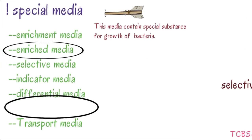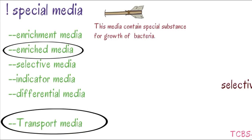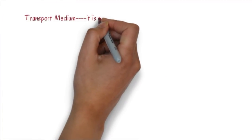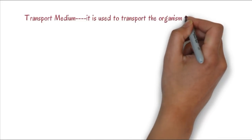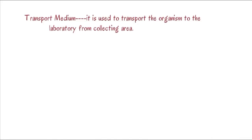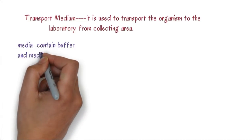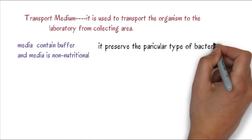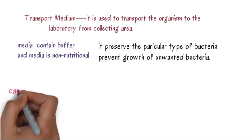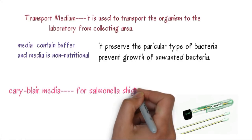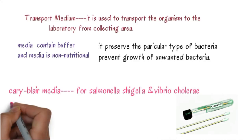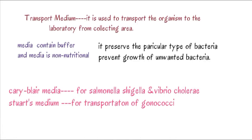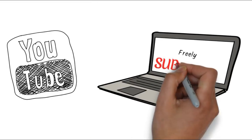Transport media is used to transport the organism to the laboratory from the collecting area. Transport media contains buffer and is non-nutritional. It preserves the particular type of bacteria and prevents unwanted growth. Examples: Cary-Blair media for Salmonella, Shigella, and Vibrio cholerae. Stuart medium is transport media for gonococci. I hope you understand all these things. One question for you: which media is differential media as well as indicator media?